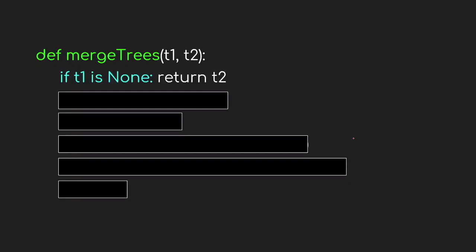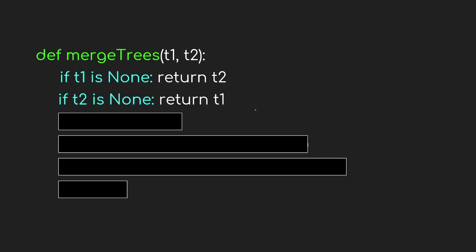Let's look at how we implement the recursion. First, if t1 is a null node, we simply return t2 — t2 may or may not be null, and that's fine. If t2 is also null, we return null, because overlapping null with null gives null. This first line accounts for both that situation and the case where only t1 is null. The next line is similar: if t2 is null, we return t1. By this point we already know t1 is not null.